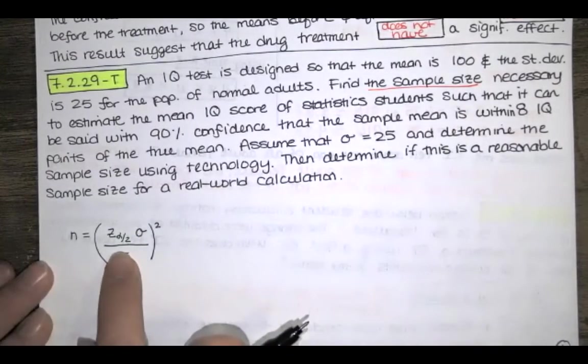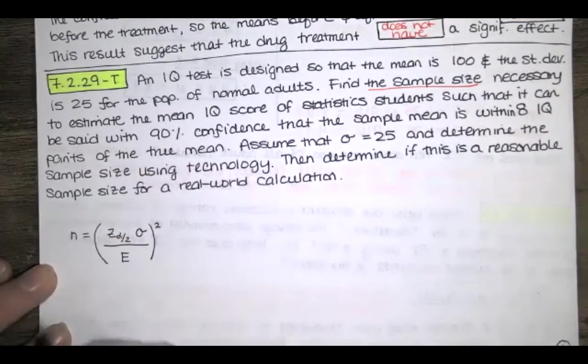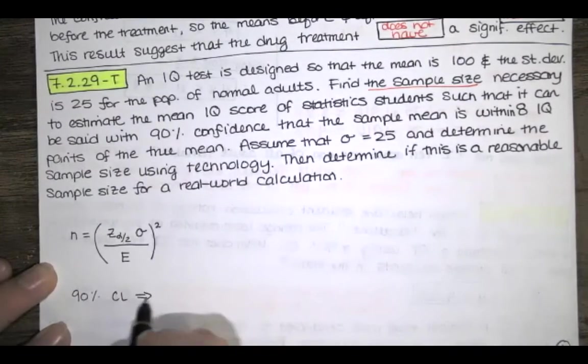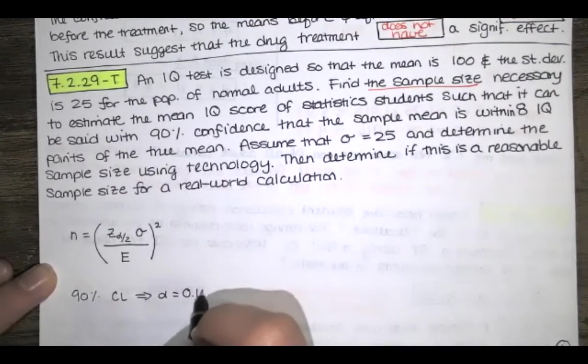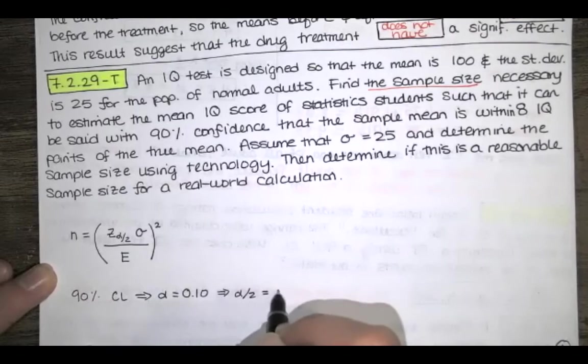In order to find Z sub alpha over 2, we've got to use the appropriate confidence level. That 90% confidence implies that alpha is the complement of that, so that's 10% but in decimal form. So that means alpha over 2 is 5%.